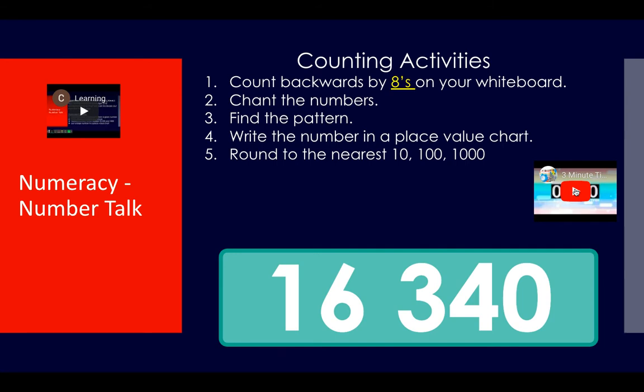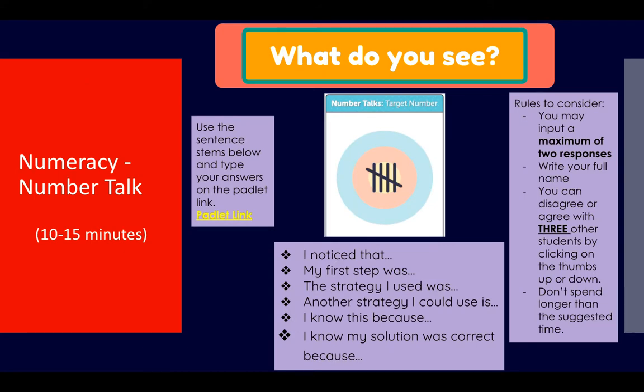Find the pattern and write it in the Google Doc, then write the number in a place value chart and round it to the nearest ten, hundred, and thousand. This is the number for today, boys and girls.